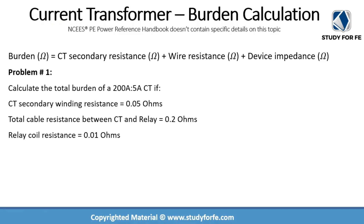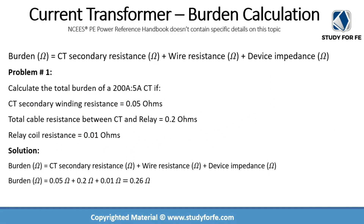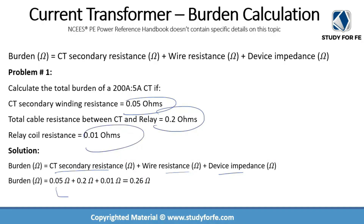Let us take a look at a practice problem. We are asked to calculate the total burden of a 200 A to 5 A CT. We are told the CT secondary winding resistance, the total cable resistance between the CT and the relay, and the relay coil resistance. The burden is the sum of CT secondary resistance plus wire resistance plus device impedance. Adding all three values provided gives a total burden of 0.26 ohms.